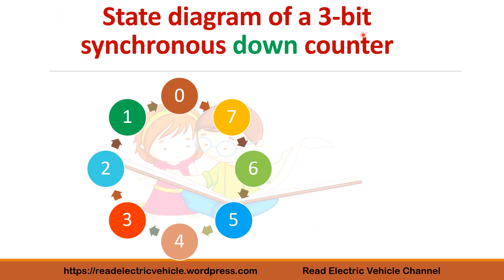This is the state diagram of a 3-bit synchronous down counter. You can start with 7 or with 0 — after 0, 7 should come. If 7 comes next it is a down counter; if 1 comes it is an up counter. You see the arrow direction: after 0, 7 is coming, then 7, 6, 5, 4, 3, 2, 1, 0. This is the sequence, or state diagram, of a 3-bit synchronous down counter.